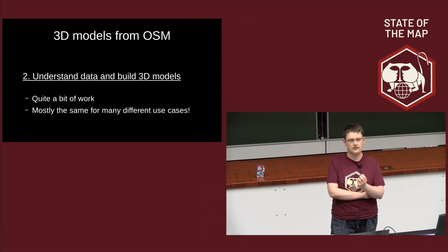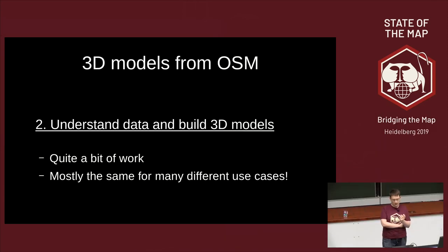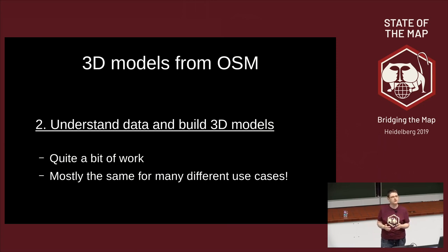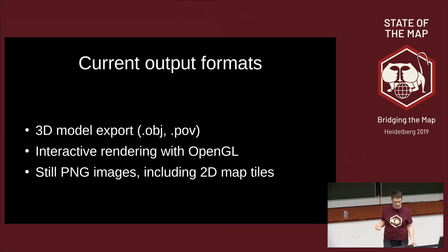There are other projects in the OSM ecosystem that do 3D models from OSM, but they often focus on one particular output — making the best for one particular gaming engine, editor, or modeling tool. OSM2World tries instead to focus on the common functionality between all these use cases. As a result, it supports multiple output formats and the goal is to add even more in the future, including 3D model export in the OBJ file format, which is very common in the 3D world and can be read by practically everything.